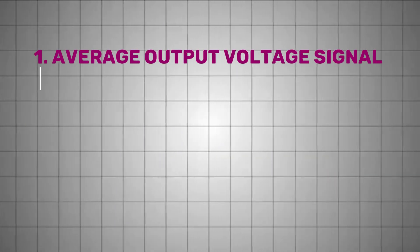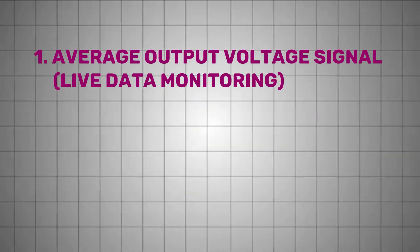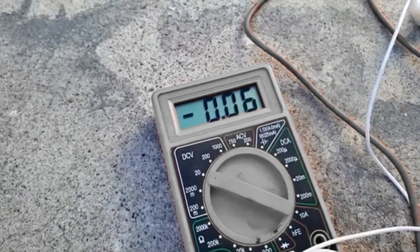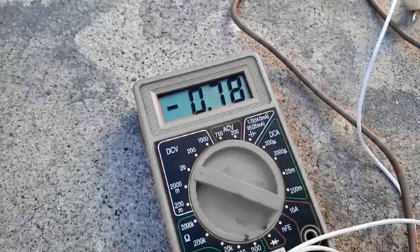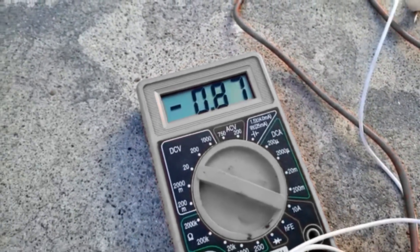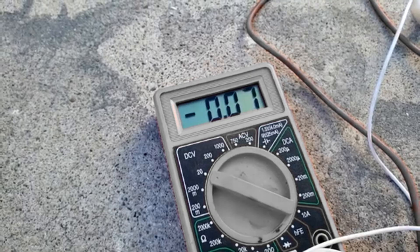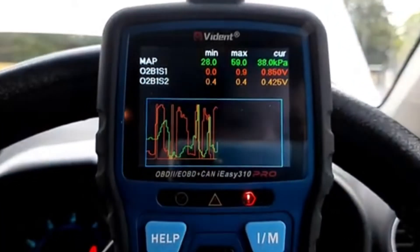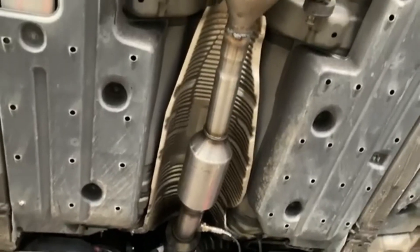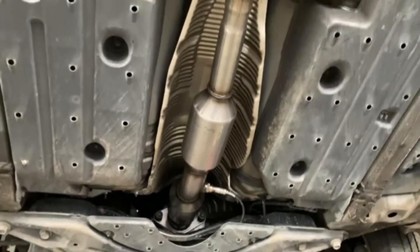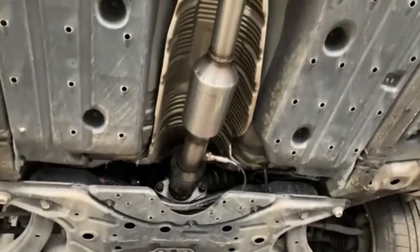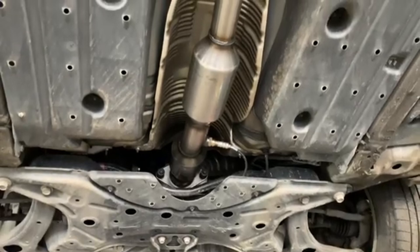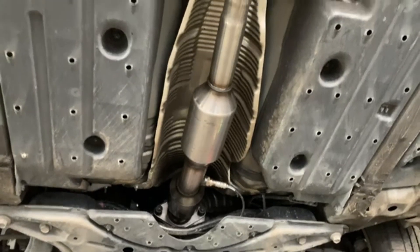The first is monitoring the average output voltage signal, also known as live data monitoring. You can do this either with a multimeter for basic voltage readings, or more effectively, through an OBD2 scanner that displays live data as you drive. Before starting the test, always allow the sensor to reach its operating temperature, typically around 600 degrees Fahrenheit, though the ideal performance range is closer to 1500 degrees Fahrenheit.